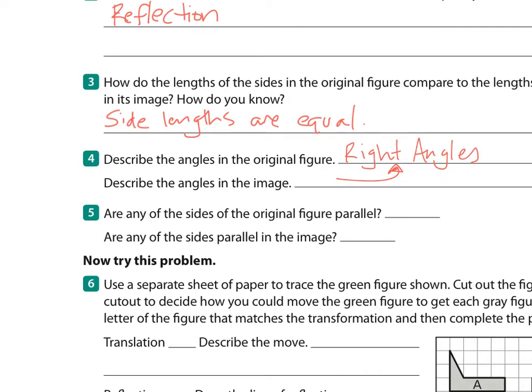How do the lengths of the sides of the original compare to the lengths of its image? Well, again, this goes back to our definition. I'll say side lengths are equal. Describe the angles in both figures. What kind of angles do we see here? Every angle in both of these figures are right angles or 90 degrees. Either of those is fine. So, again, they're the same in both of them. Are any sides of the original figures parallel? Absolutely they are.